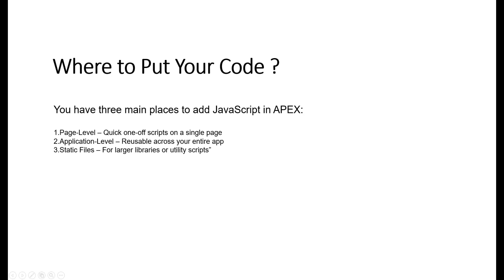You have three main places to add JavaScript in Apex: page level for quick one-off scripts on a single page, application level for reusable code across your entire app, and static files for larger libraries or utility scripts.